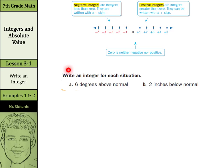So when we're asked to write an integer for each situation, 6 degrees above normal could be written as a plus 6 or simply 6. If we're looking at 2 inches below normal, it is the 2, but we have to include the negative sign, so negative 2.